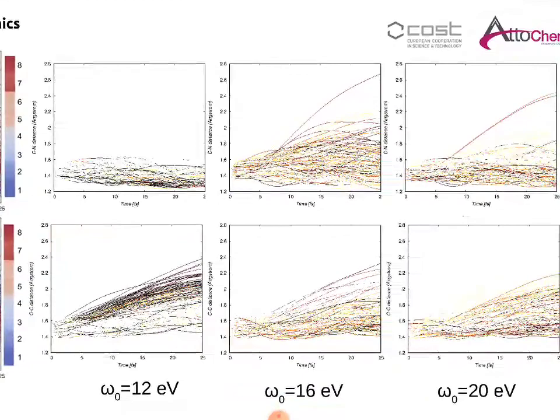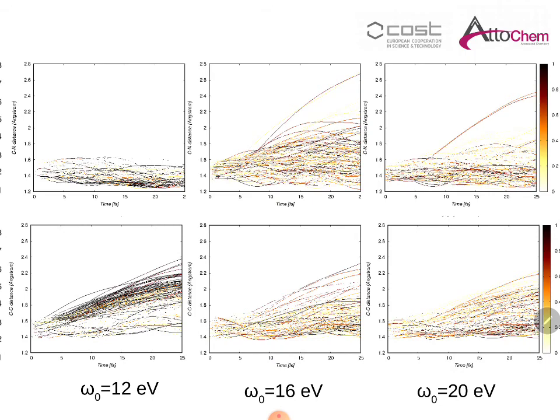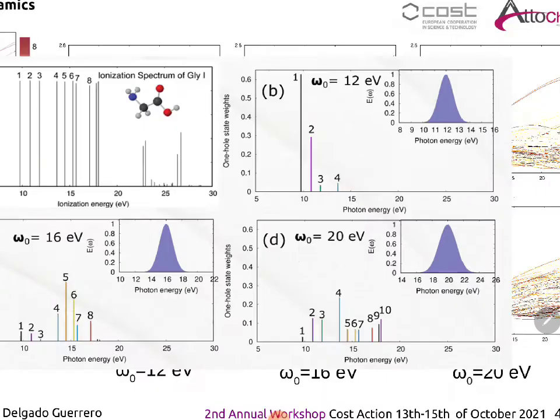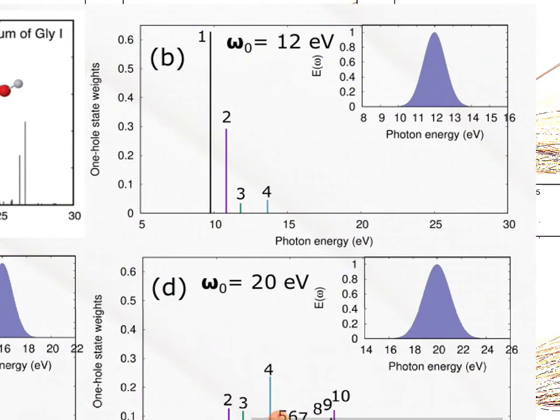If we consider now the action of pulses with different central frequencies, and considering that darker lines indicate higher probability, we can see how 12 eV ionization favors fragmentation through the CC bond. As we increase the central frequency of the pulse, we are favoring fragmentation through the CN bond, being this slightly higher for the case of the 16 eV pulse, but not for the case of the 20 eV pulse. That's because pulses with different central frequencies create a different cationic wave packet, which is the result of different coherent superpositions of cationic states.